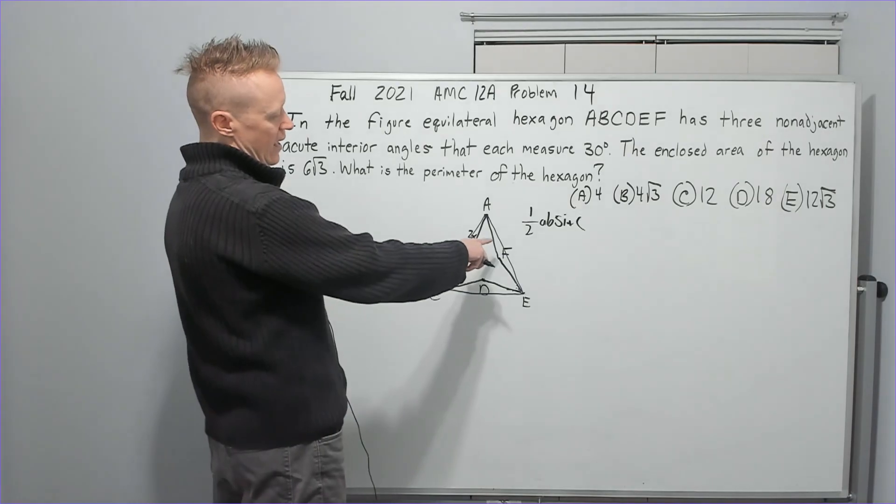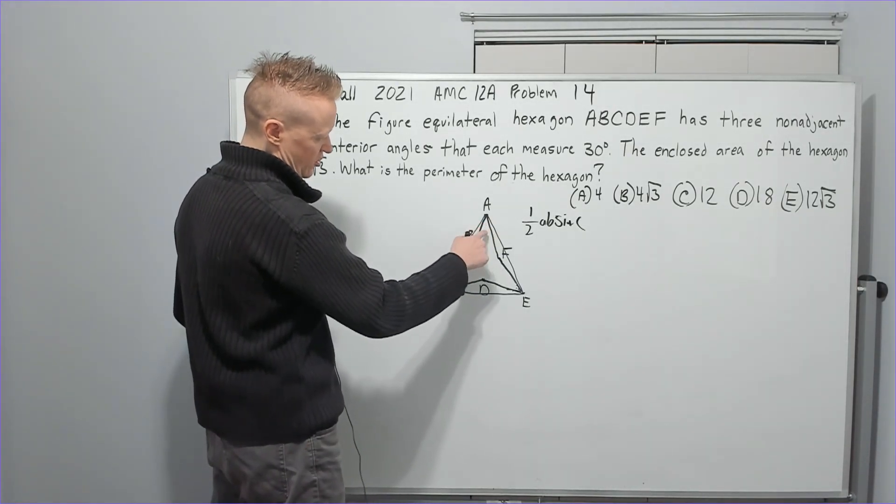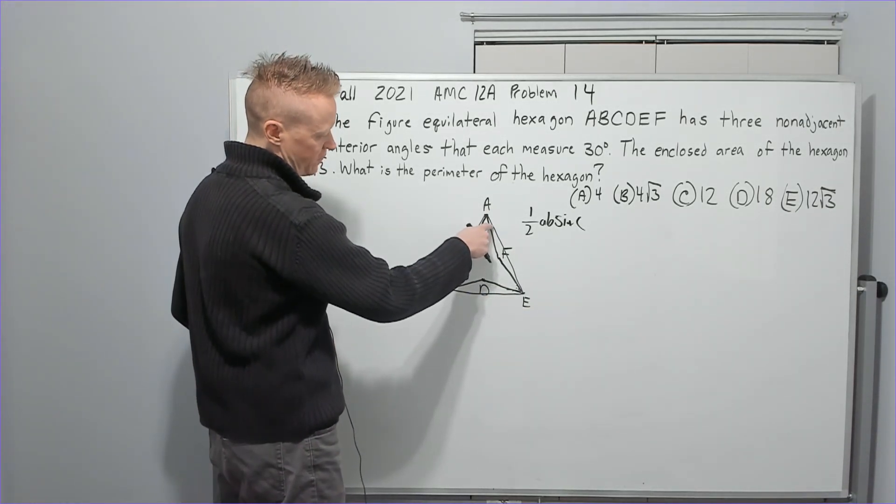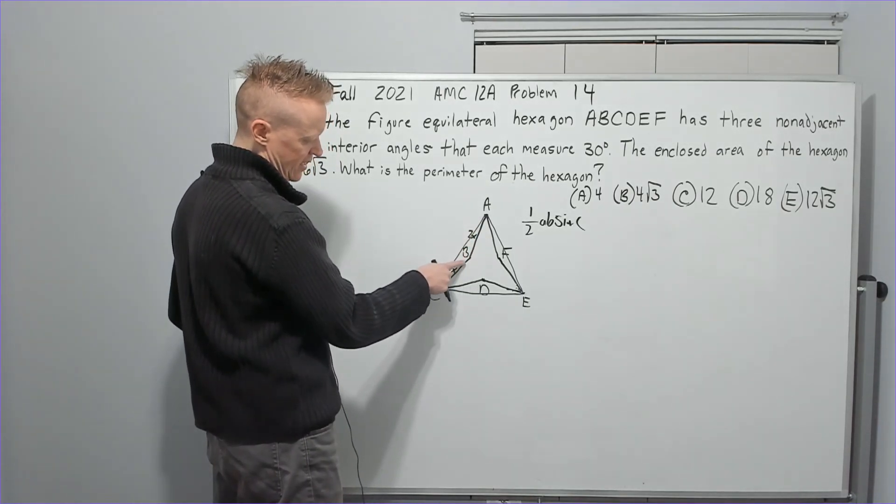So what I did next was I said, okay, if this is 30, and this blue triangle that I drew is equilateral, this will be 15 and 15. And 15 and 15 makes this angle 150.